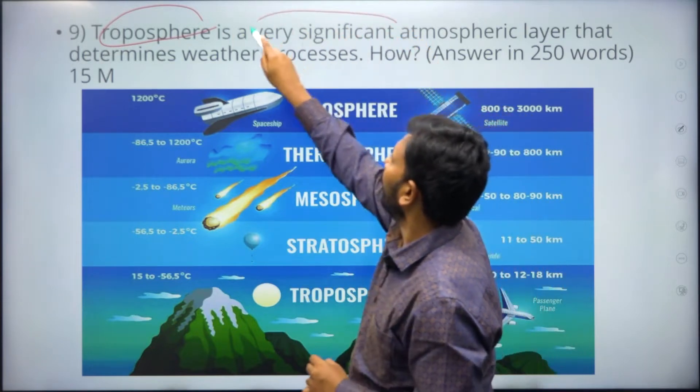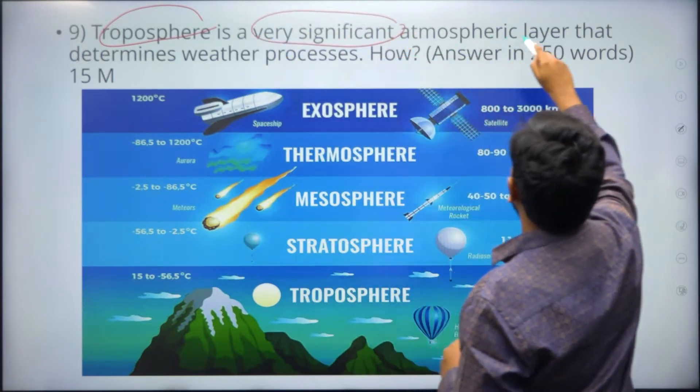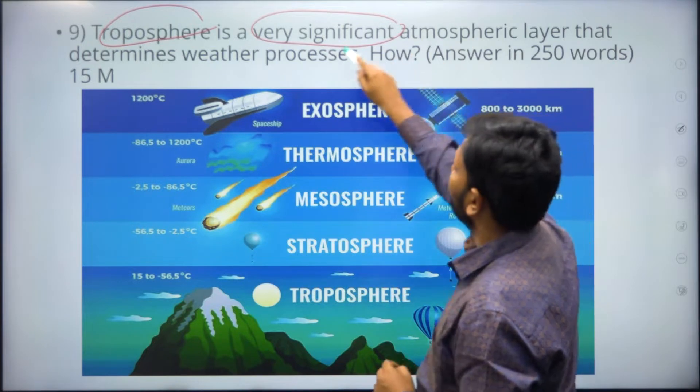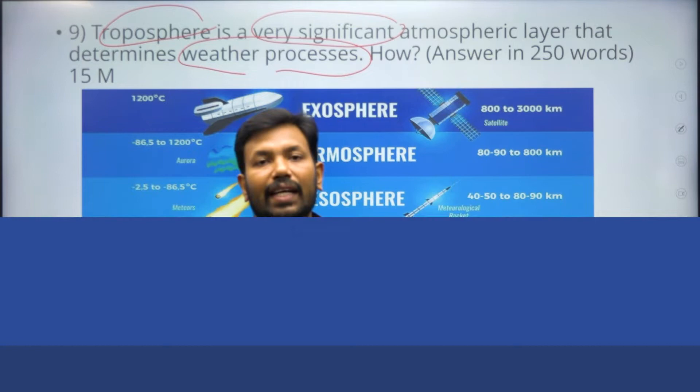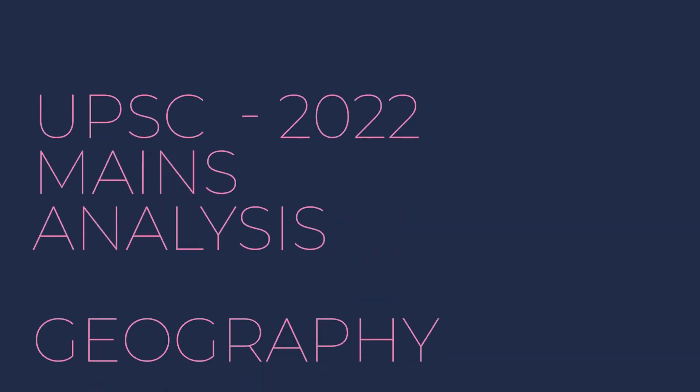It is a very significant atmospheric layer that determines weather processes. You have to concentrate on this. You can prove in at least half a page or a full page, drawing this diagram, that troposphere is the important layer.